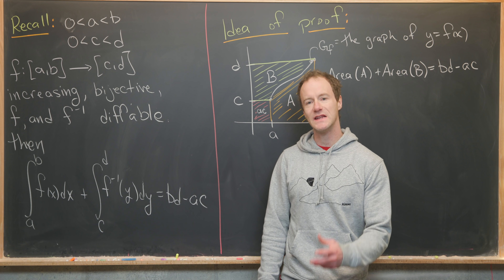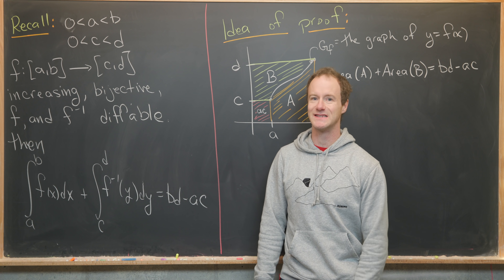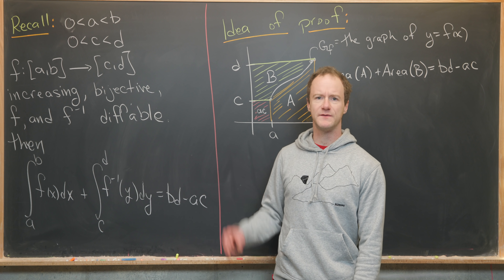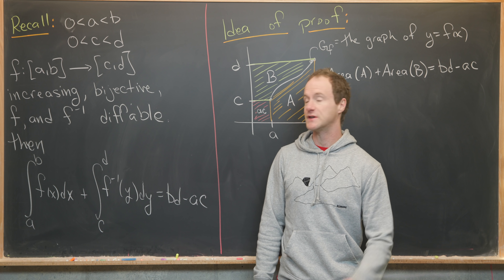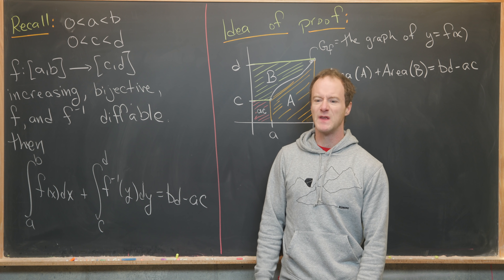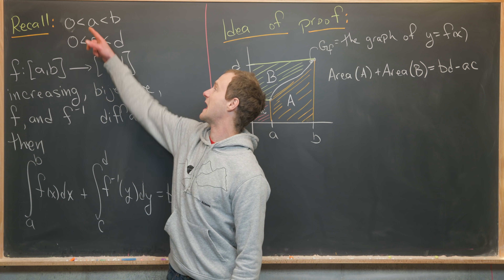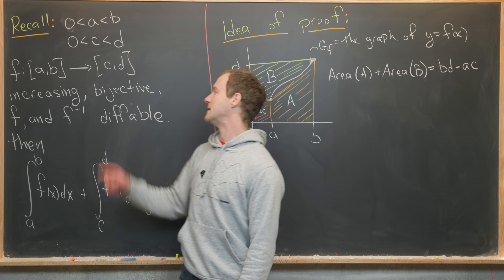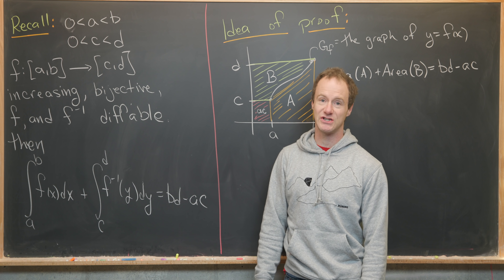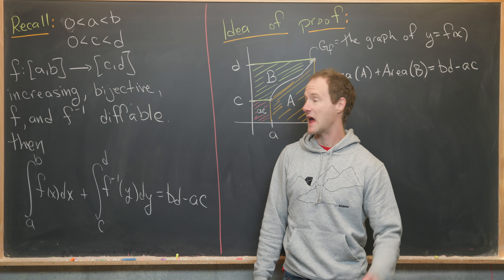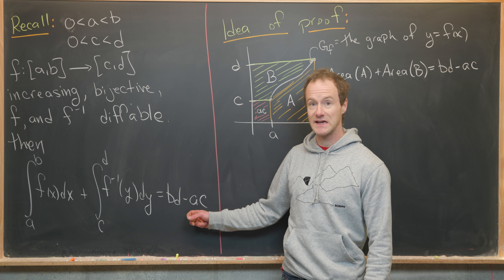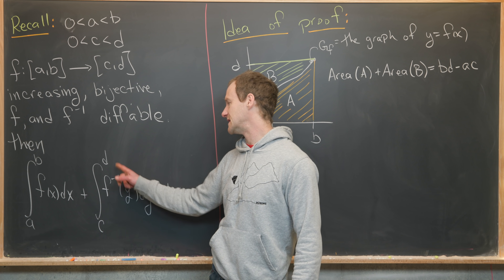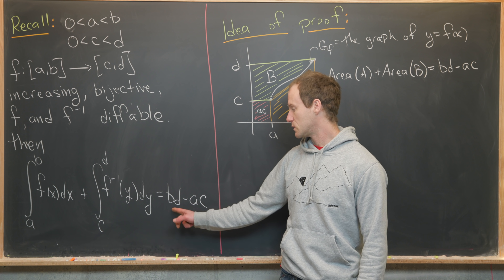I've done a couple of videos on this nice integral identity involving the integral of a function and its inverse, and here I want to wring one more result out of that. Let's recall what we've seen previously. We have a closed interval [a,b] and a closed interval [c,d], where a and c are positive real numbers. We have a function from [a,b] to [c,d], increasing, bijective, with f and f-inverse both differentiable. Then we have this nice integral identity: the integral from a to b of f plus the integral from c to d of f-inverse equals bd minus ac.